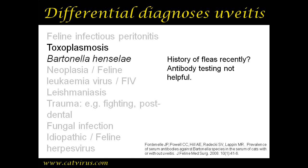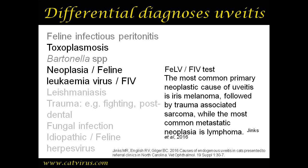Two options remain for diagnosing Bartonella: taking a sample of aqueous humor for PCR testing, or a trial treatment with doxycycline, oxytetracycline, or azithromycin to see if the eye responds to those antibiotics. We keep this diagnosis on the list of possibilities, but since Tommy was an older cat and most Bartonella cases are in kittens, and because most Bartonella infection is subclinical, we consider it less likely. It stays on the list - lower down - to be tested later if everything else comes back negative.